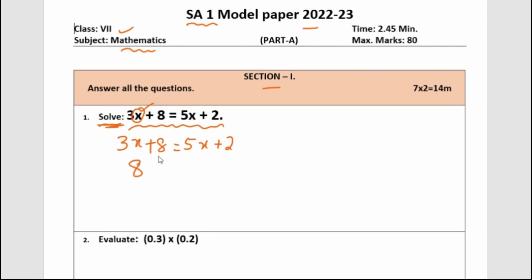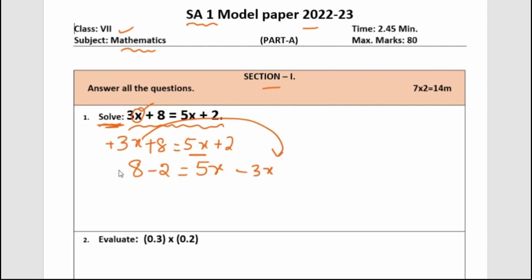We keep 8 on the left side. Plus 2 moves to this side and becomes minus 2. We keep 5x on the right side, and plus 3x goes to the other side and becomes minus 3x. So, 8 minus 2 is 6, and 5x minus 3x — both are like terms — gives us 2x.